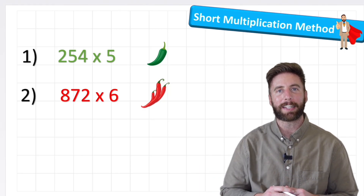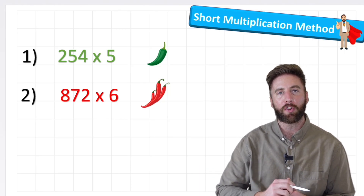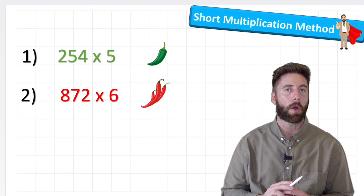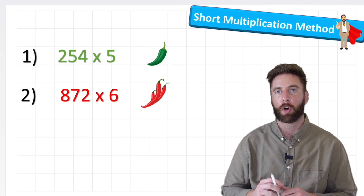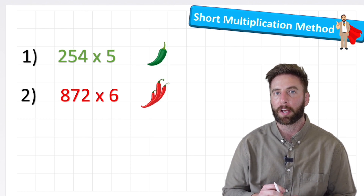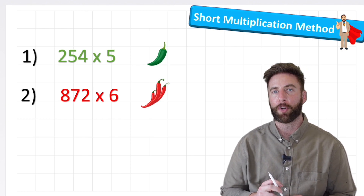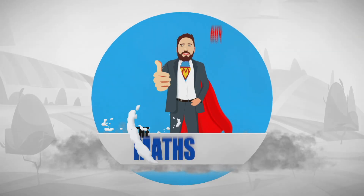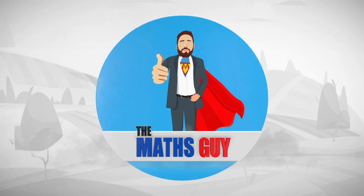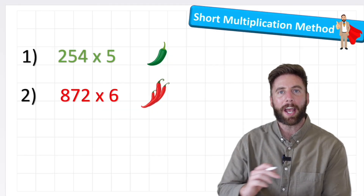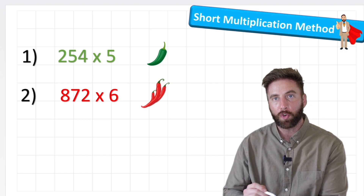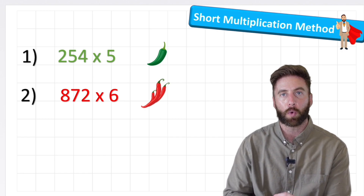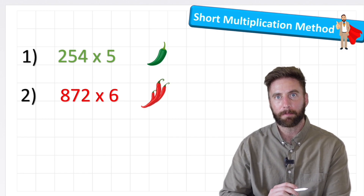Welcome back to The Maths Guy everybody. Today we're looking at three by one digit multiplication, which involves regrouping or bridging. We've got a green chili challenge and a red chili challenge — one that's slightly harder. Let's begin.